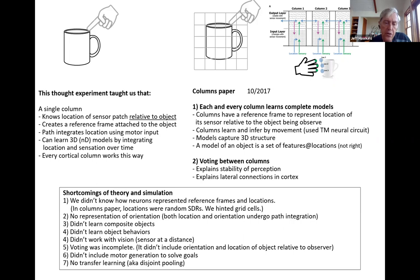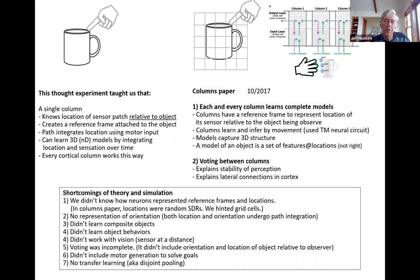There are a lot of shortcomings of both the theory and the simulation. First, we didn't know how neurons could represent reference frames and locations — when we wrote the paper, we had absolutely no idea. What we did was assign random SDRs to locations and use those. At the very end of the paper, when we were about to submit, we hinted that grid cells could provide the answers, but we didn't talk about it much.